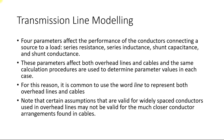The series R and L are distributed all along the line. Additionally, two adjacent conductors with air in between act like a capacitor — one plate, a second plate, and air as insulation — giving rise to shunt capacitance. This capacitive effect exists between transmission line conductors and also from the conductor to ground.